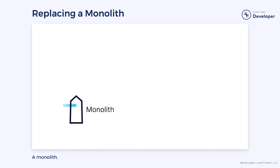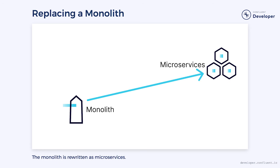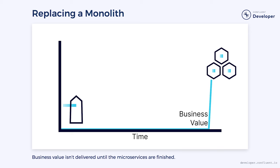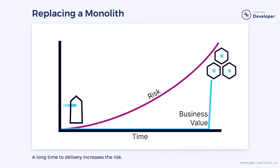Many microservices are built to replace existing monoliths, and there are different approaches to doing this. One option is to rewrite the entire monolith using a microservice architecture. However, this can be dangerous because it takes a long time before business value can be delivered — essentially, you have to replace the entire monolith before you begin to see the value of your efforts. The greatest risk to any software project is time, specifically the time to deliver business value. As time increases, so does the cost and potential for failure. The truth is that this wholesale replacement is a form of monolithic thinking. The goal should be to find ways to shorten the time to delivery in order to reduce risks.